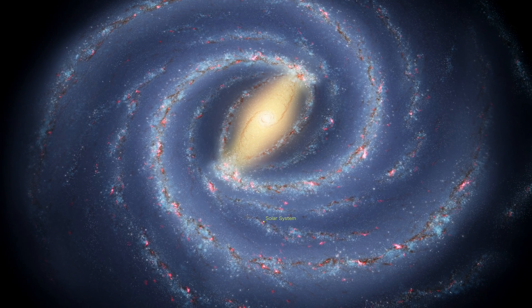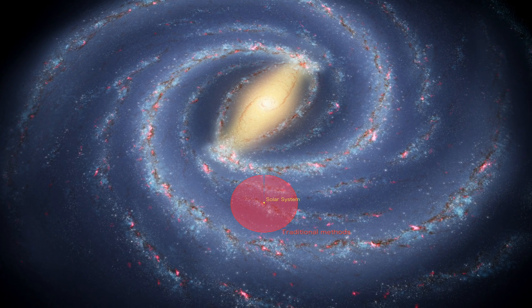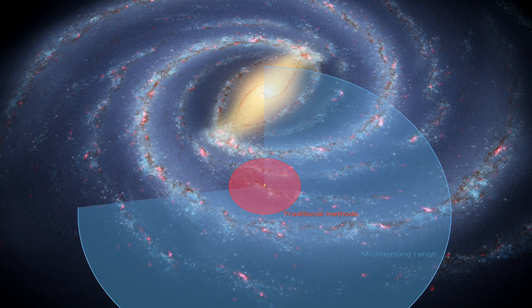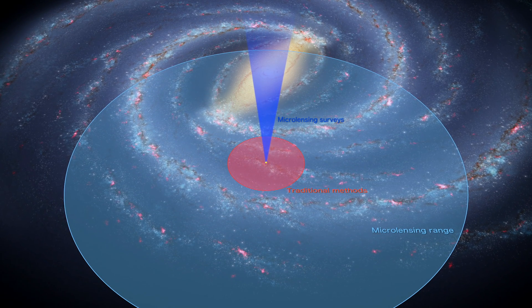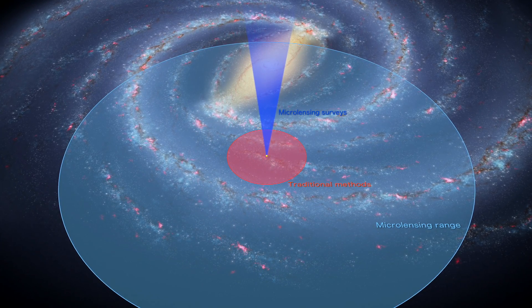Microlensing opens a planetary window onto a larger part of the galaxy, reaching thousands of light-years. And because microlensing is more sensitive to smaller planets farther from their stars, it can reveal new planetary populations.